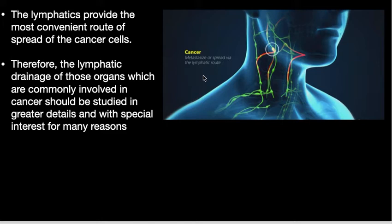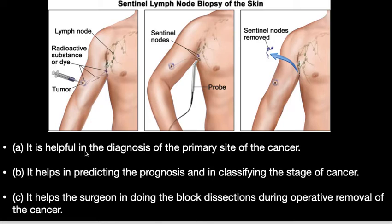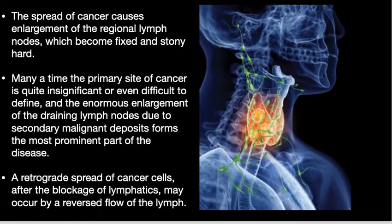Chronic infection such as tuberculosis and syphilis cause chronic lymphadenitis. The lymphatics provide the most convenient route of spread of cancer cells; therefore the lymphatic drainage of organs commonly involved in cancer should be studied with greater detail. This knowledge is helpful in diagnosis of the primary site of cancer — that is the sentinel node biopsy — and helps in predicting prognosis, classifying the stage of cancer, and assists the surgeon in performing block dissection during operative removal of the cancer.